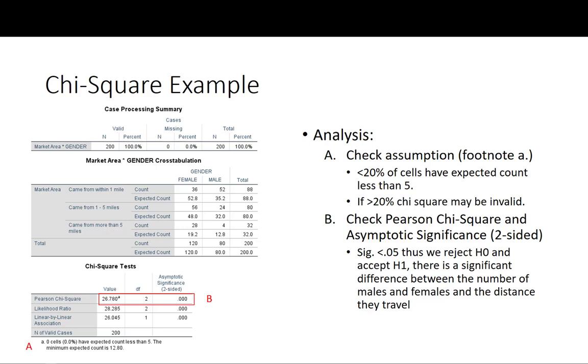The second thing we need to do is check the Pearson chi-square and asymptotic significance two-sided. Because our significance of 0.000 is less than 0.05 we reject the null hypothesis and accept the alternative hypothesis and say that there is a significant difference between the number of males and females and the distance they travel to Delhi Depot.